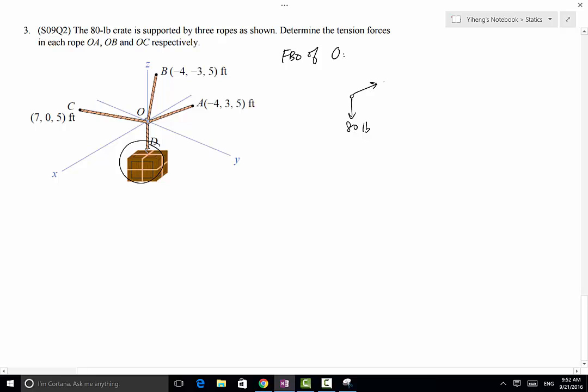And then we have tension force TA developed in rope OA, tension force TB, and lastly tension force TC. That completes the free-body diagram.